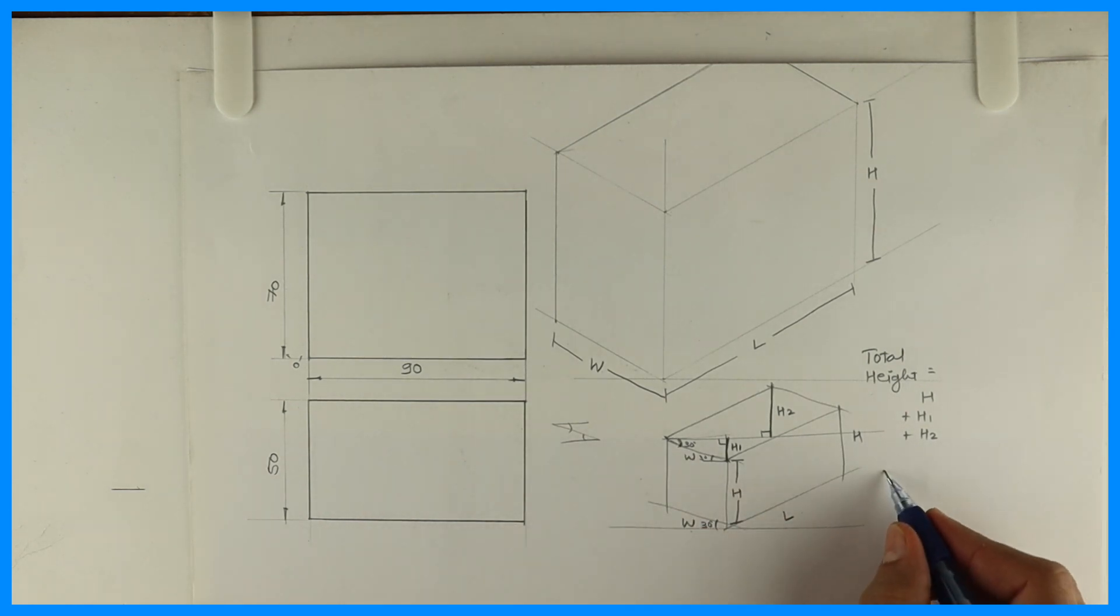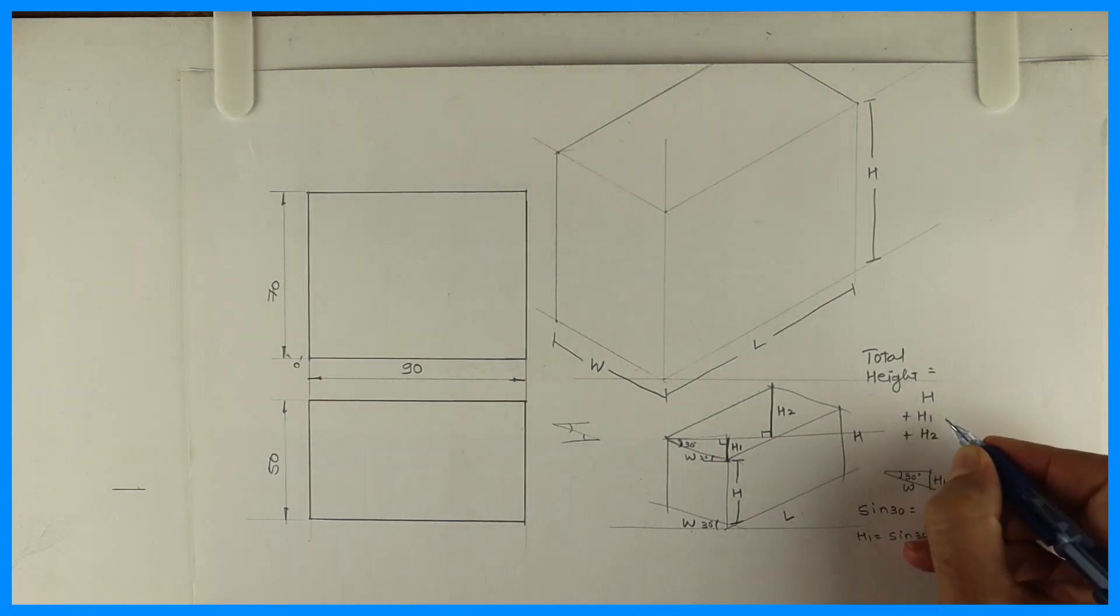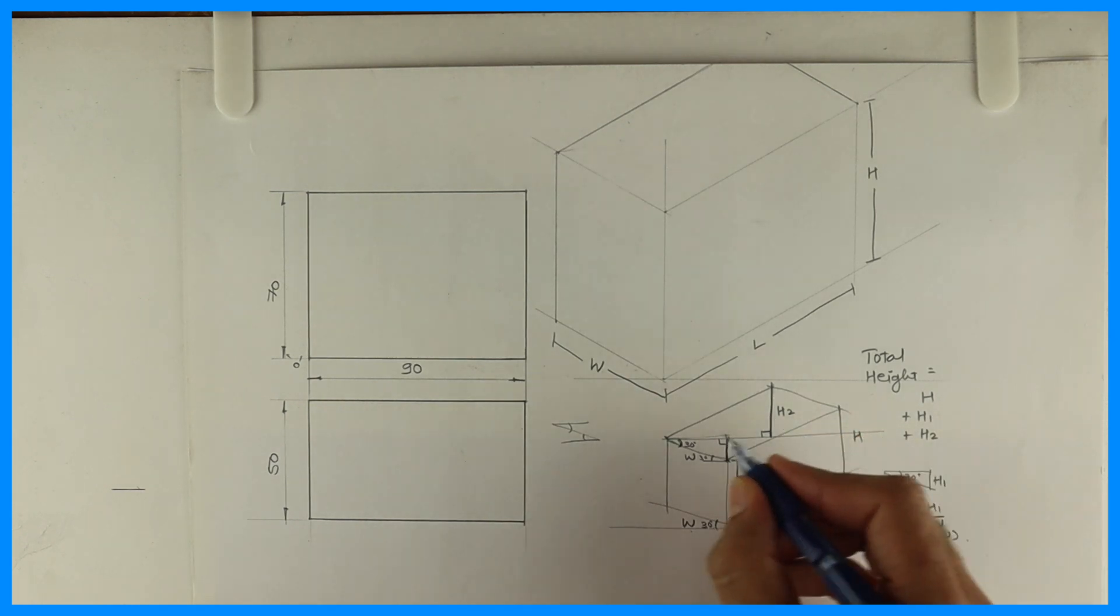So if I write sine 30. See this. This is H1. This is 30. This is W. So if I write sine 30 is equal to H1 upon W. So we can write H1 equals sine 30 into W.